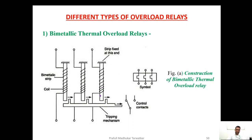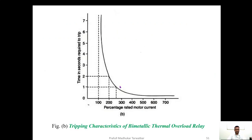The coil carries the respective load current. The inverse time-current characteristic shows motor current on the x-axis and time of operation on the y-axis. As the current increases, the time of operation decreases — this is called the inverse time-current characteristic.